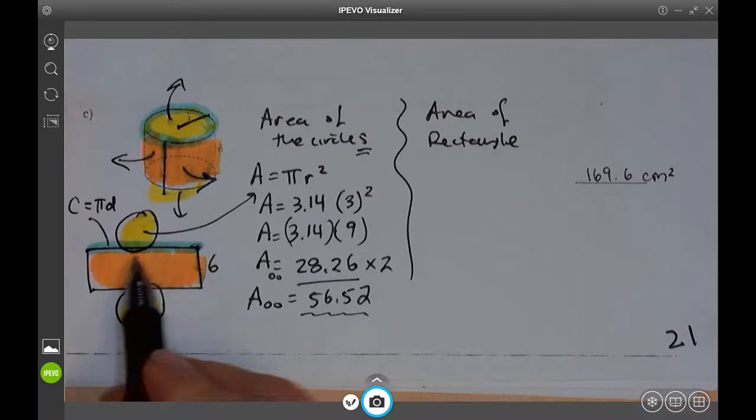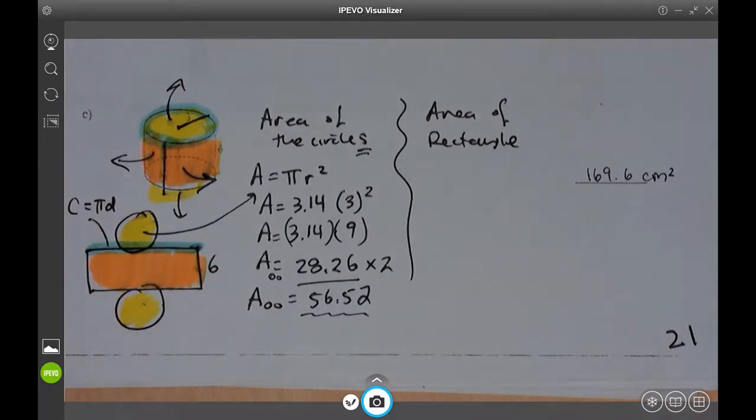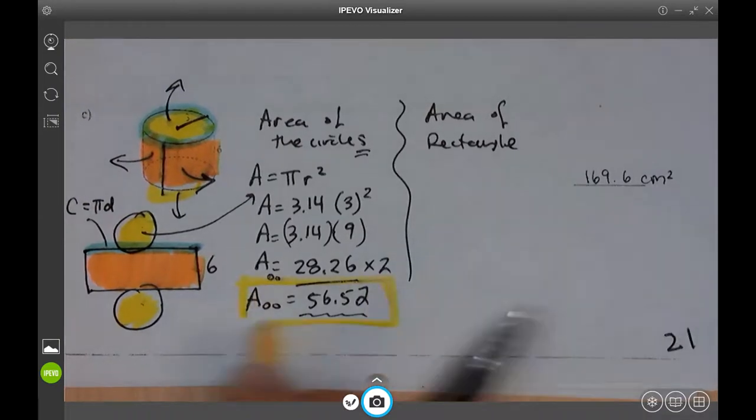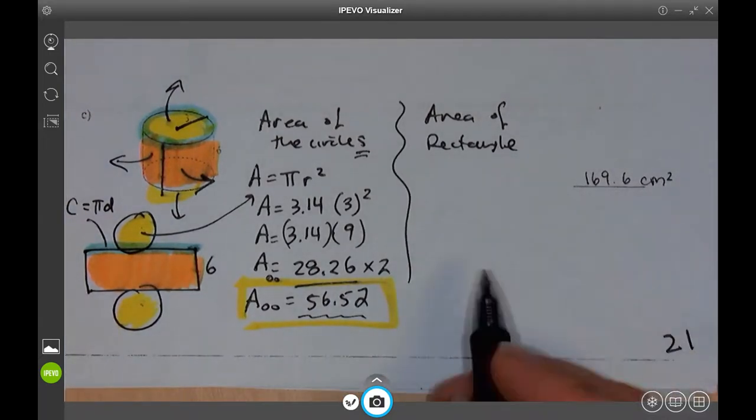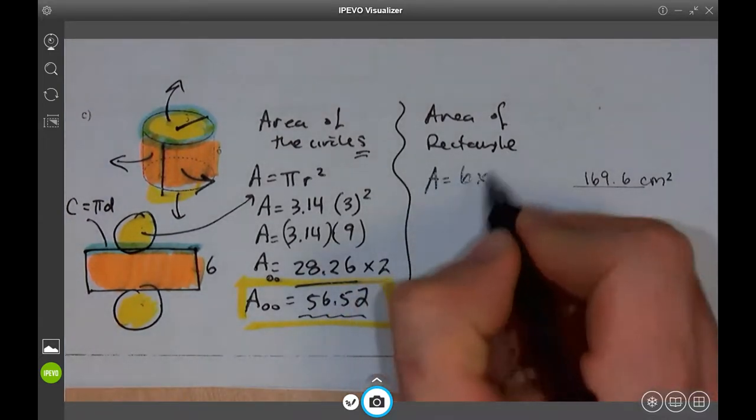Now I just need to find the area of the rectangle. So this yellow part is done. Okay? That's the yellow. Both those two circles. Now I need to find the area of the rectangle, which is going to be area of a rectangle is base times height.